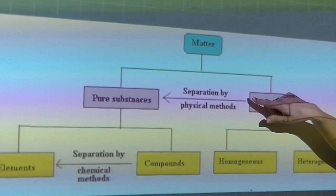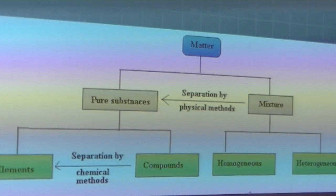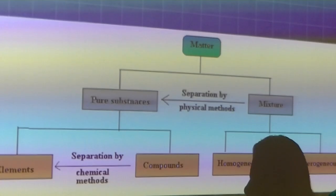And then we have two ways that matter is then separated based on composition. We have pure substances, which is not spelled correctly on the screen, so don't spell like that. Pure substances, and then we have a mixture. And the arrow you need to draw in here to the left is showing that mixtures can be separated by physical methods into pure substances.